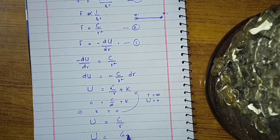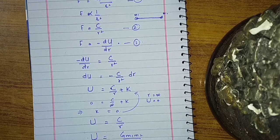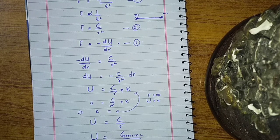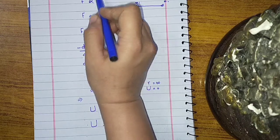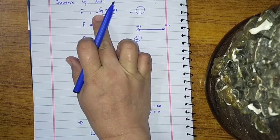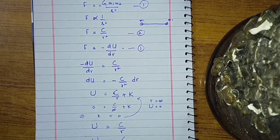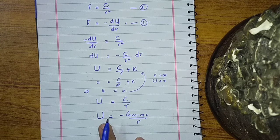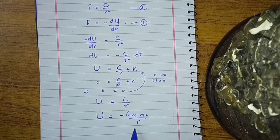This potential energy has a relation with the Inverse Square Law. We now introduce the negative sign, which shows that the energy is attractive. Since F equals minus G M1 M2 over R squared, the minus sign shows the force is attractive — and gravitational force is always attractive. Therefore, U equals minus G M1 M2 over R. This clearly shows that gravitational potential energy is related to the Inverse Square Law.